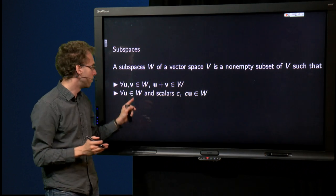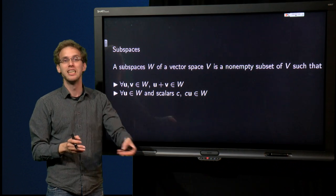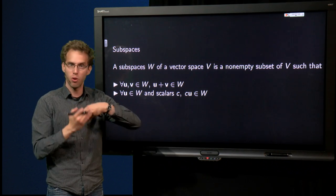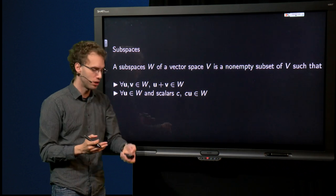And for all u in V and scalar c, c times u has to be in W. And again, c times u is always a vector, so it will always be in V. Specifically it has to be in W in order for W to be a subspace.